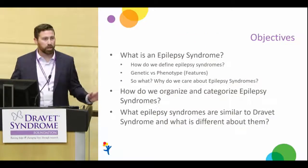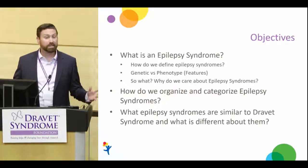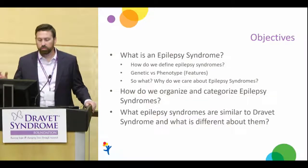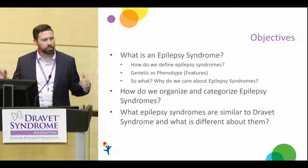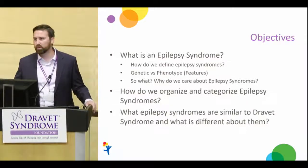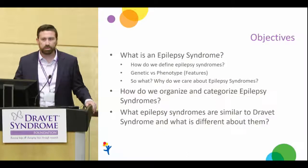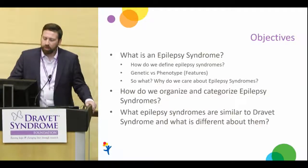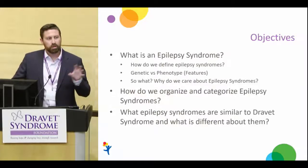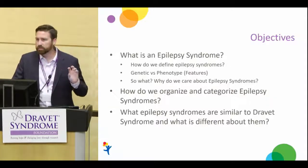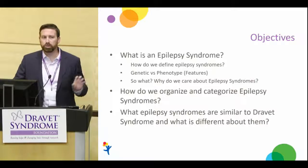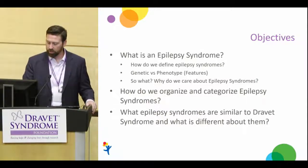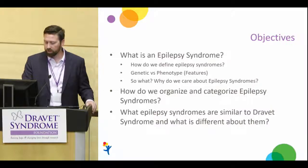So what am I trying to get across in the next half hour? What is an epilepsy syndrome — just starting with the basics. What are these terms we use, genotype and phenotype correlation? I'll define those. And why do we care about epilepsy syndromes? How do we as an epilepsy community organize them? And what are some epilepsy syndromes in the area of Dravet — related to, close to, or sometimes confused with Dravet? How do we distinguish them and where does that leave us?